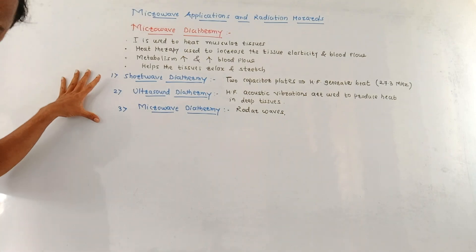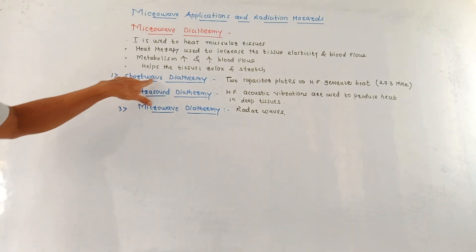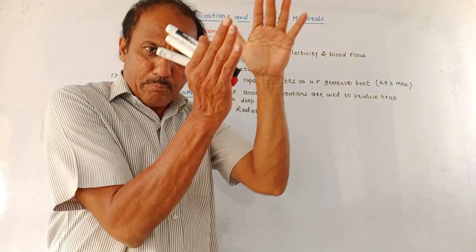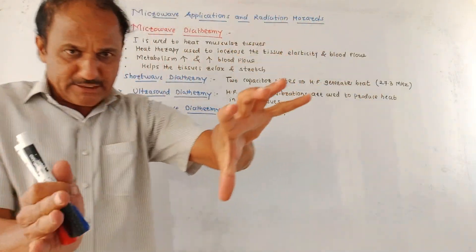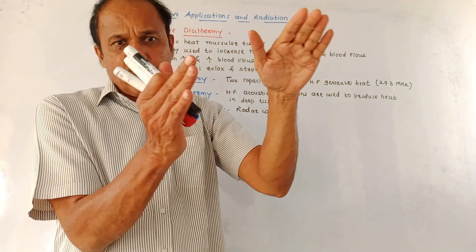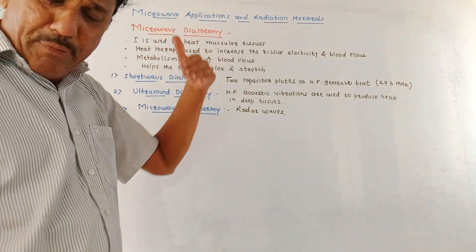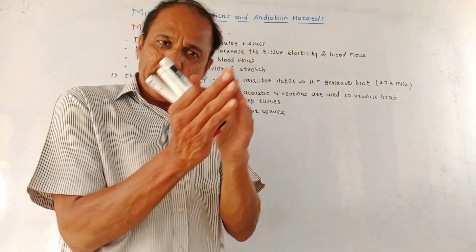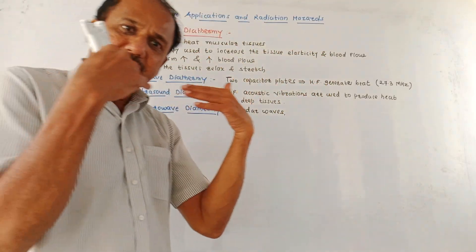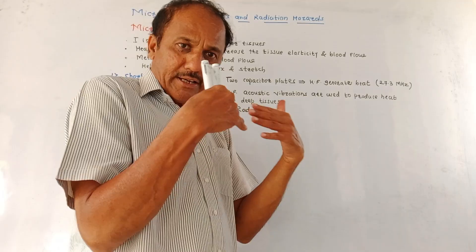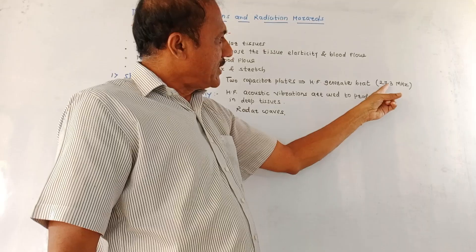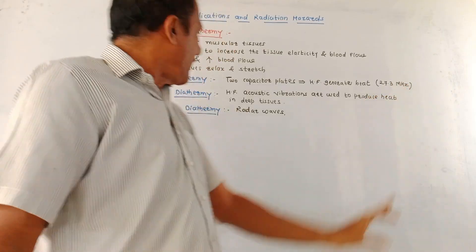There are three major methods. One is shortwave diathermy. In this case, capacitors are used. Two capacitor plates are placed across the part of the body which is to be treated. Then the high frequency signal is applied to the plates of capacitor. This high frequency signal generates the heat and then that heat therapy is applied to the particular muscular tissue. Usually the frequency of operation is 27.3 MHz.